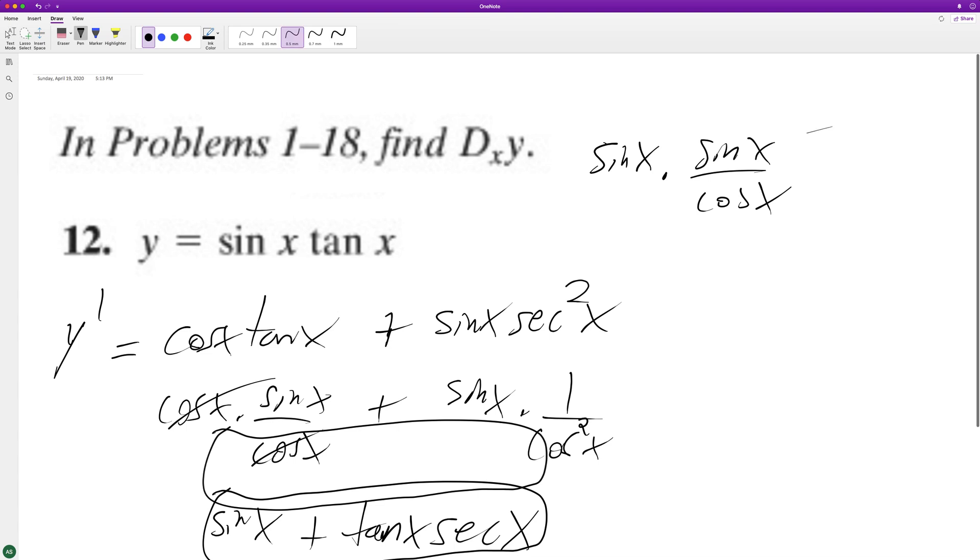So this is sine squared of x over cosine of x using the quotient rule. Derivative of sine squared is going to be 2 sine of x cosine of x times the bottom. Times the bottom.